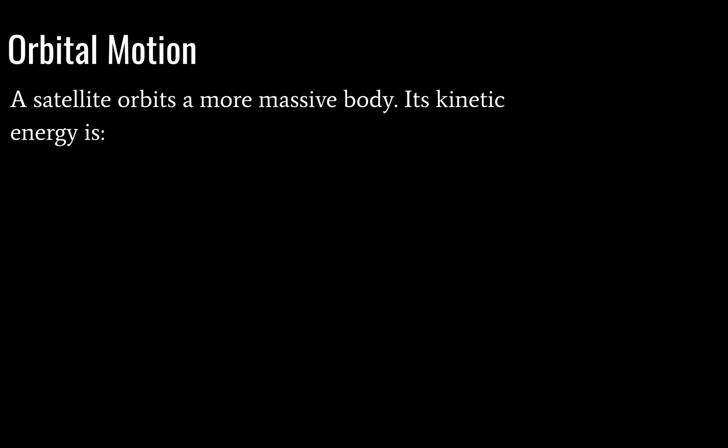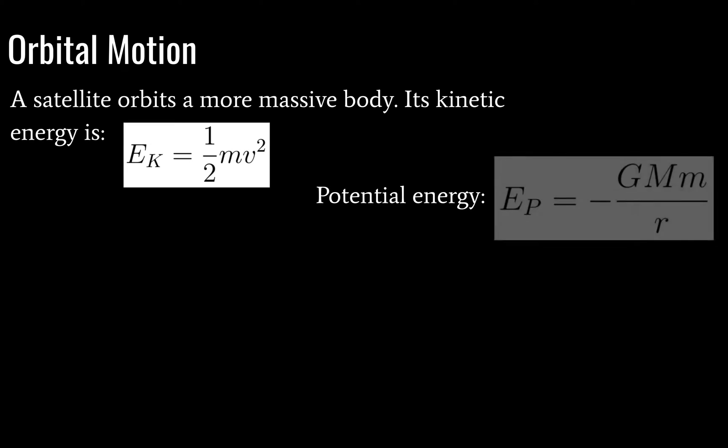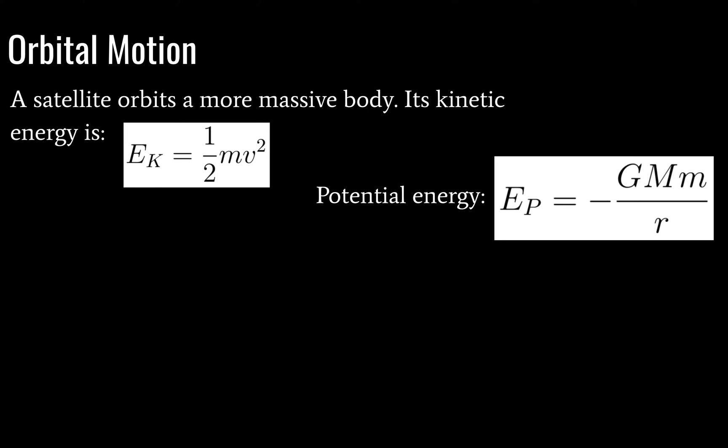Let's take a look at orbital motion. Generally, the definition of a satellite is that it's an object orbiting a more massive body. Its kinetic energy will be given by one-half mass times velocity squared. Its potential energy will be given by its gravitational potential energy, the formula for which we have seen in topic 10.1. This formula is in your data booklet under 10.2.